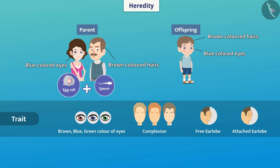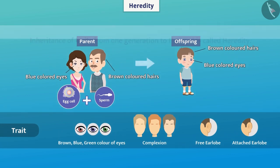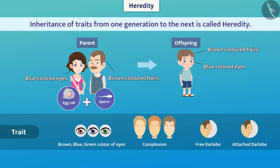The transfer of various traits from parent to child is called heredity. In other words, inheritance of traits from one generation to the next is called heredity.